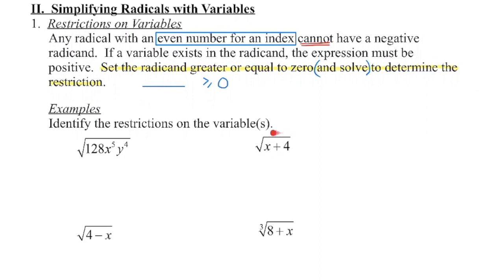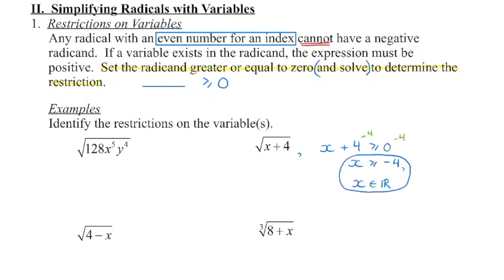For example, I can see that it is a square root because I have an even index of 2, so I know I have to watch for a restriction. I'm going to take this entire radicand and set it so that it's greater than or equal to 0, then solve this inequality to isolate my variable. I need to remove the plus 4 by subtracting 4 from each side, and when I do that I end up with x must be greater than or equal to negative 4, and x is an element of the real number system.